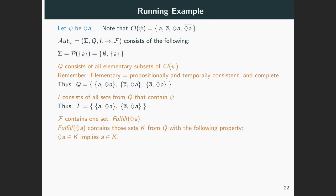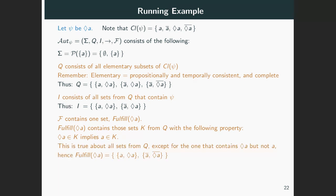Now let's see how fulfill of eventually A looks like. Remember that it consists of all those scenarios K that contain A if they contain eventually A — that is, do not contain eventually A without containing A. And this is true for two of the scenarios in Q: that consisting of A and eventually A, and that consisting of not A and not eventually A.